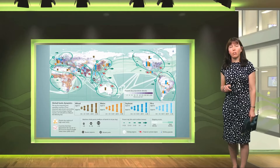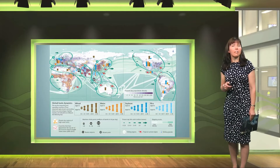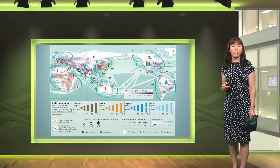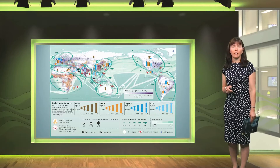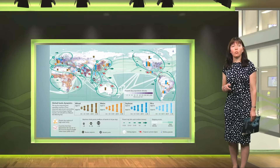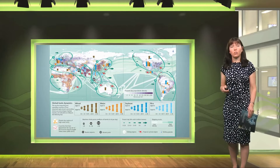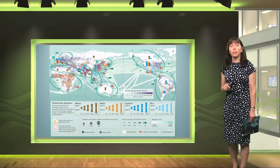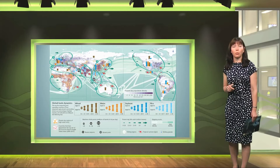Countries which appear on the fragile states index are outlined in red. We've included this because it's an indicator of governance and therefore tells us something about the country's ability to respond to extreme weather events or to adapt to long-term changes in climate. We've shown ports, airports and shipping routes as well as maritime choke points, which are narrow straits through which large volumes of shipping pass. We've included these because they are important critical infrastructure and it supports global trade.